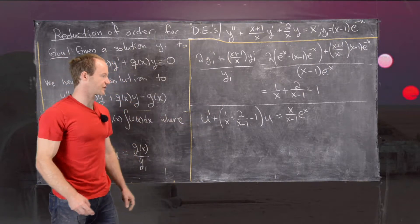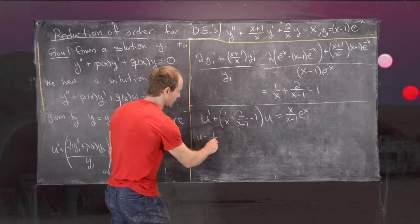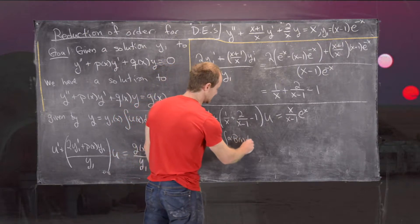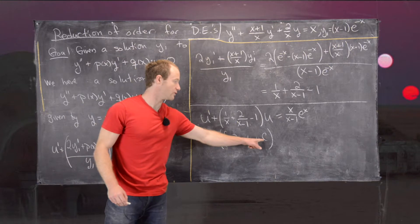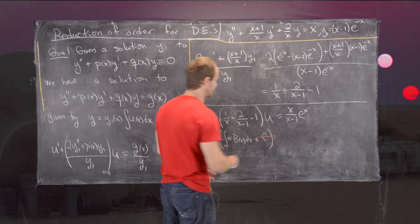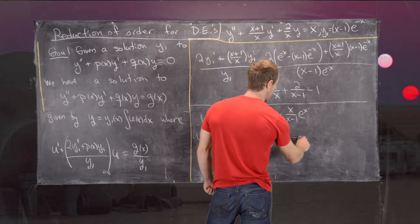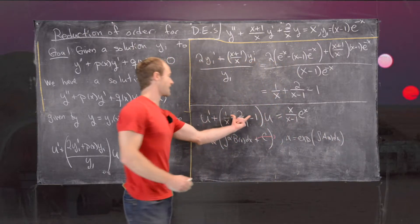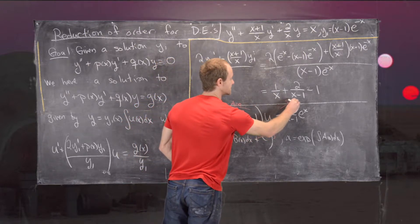For solving a first-order linear differential equation, the solution is given by: u equals 1/α times the antiderivative of α times b dx, plus a constant. We won't need the constant because that just gives us y1 again, so we'll leave it off. Here α equals the exponential of the antiderivative of a(x) dx, where a(x) is 1/x plus 2/(x minus 1) minus 1, and b(x) is x/(x minus 1) times e to the x.